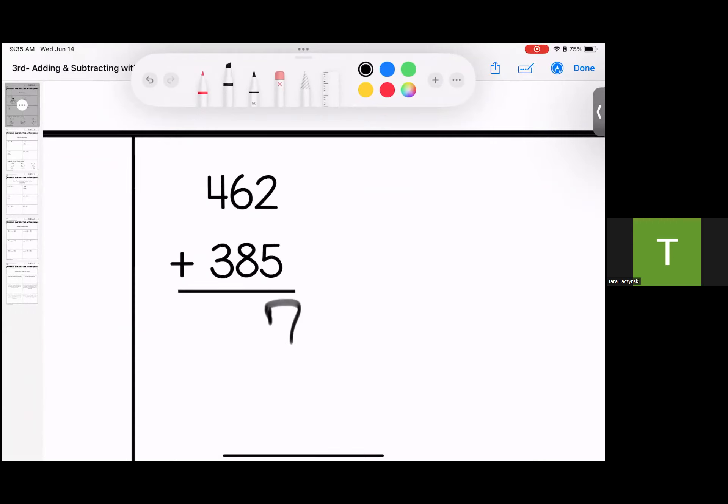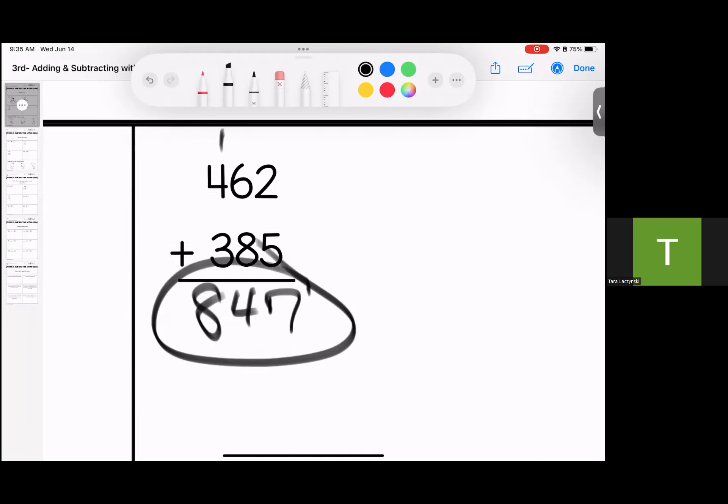2 plus 5 is 7. 6 plus 8 is 14. 4 and 3 is 7, add 1 is 8.